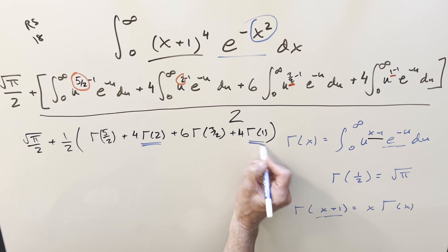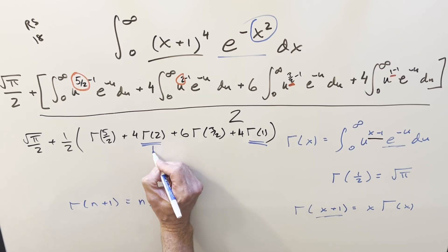But now for these integer values of gamma, we can just express these as factorials. We've got this formula. Let's see, gamma(n + 1) we can write as n factorial. So this is going to be reduced to 1 factorial. This is going to be 0 factorial. But both those values are 1, so we can make that go away.